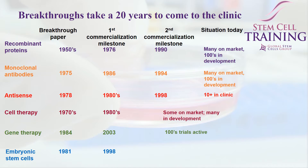When you think about any breakthrough that has come into the clinic, it takes more than 20 years to bring these through to the clinic. For example, recombinant proteins and monoclonal antibodies were originally developed in the 50s and didn't make it to the market until 20-plus years later. When you think about stem cell therapies, these began to be developed in the 70s and 80s, and so we are just getting to the point where we have many cell therapies that are developing and some on the market.